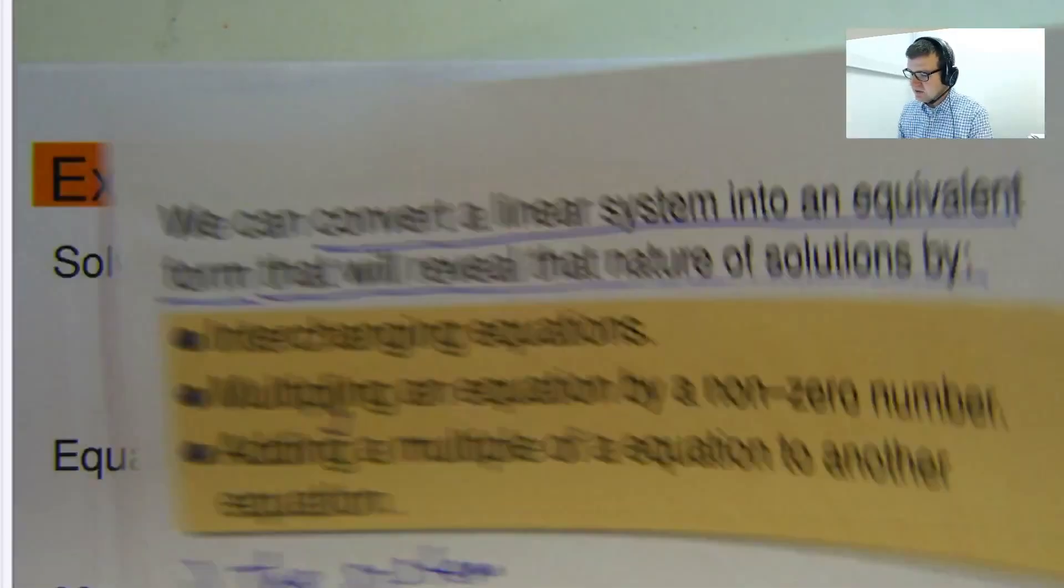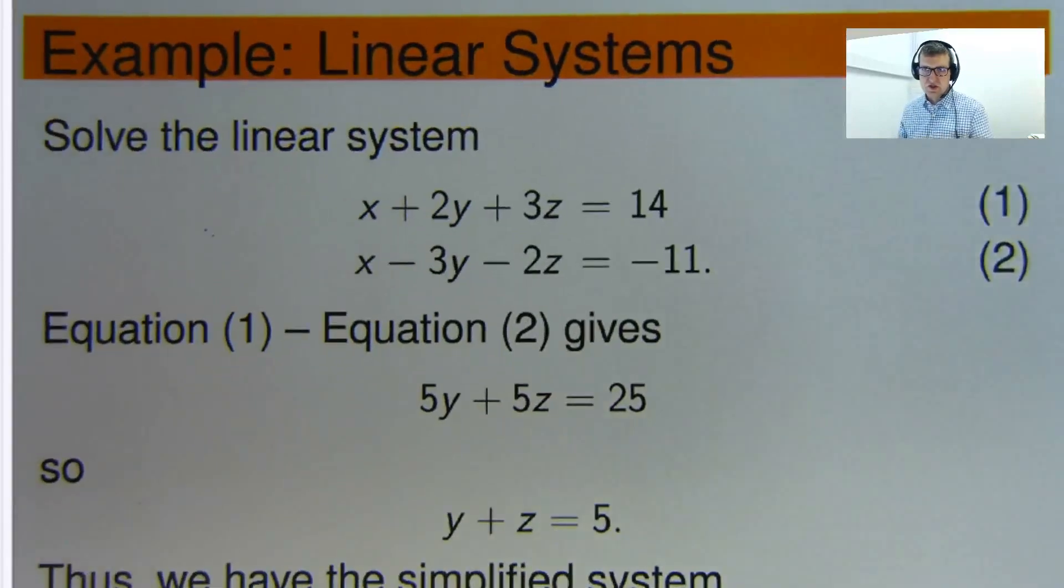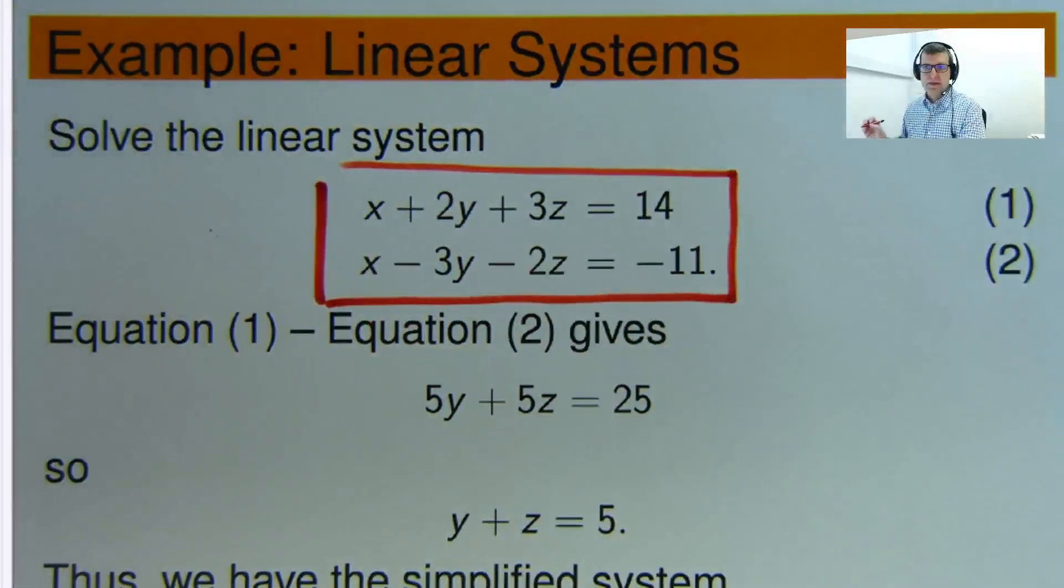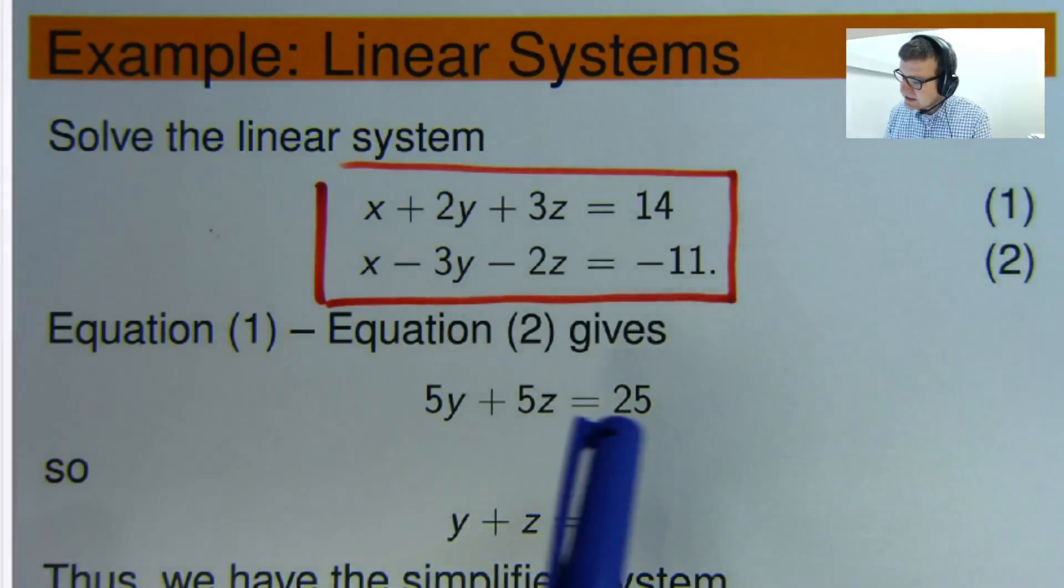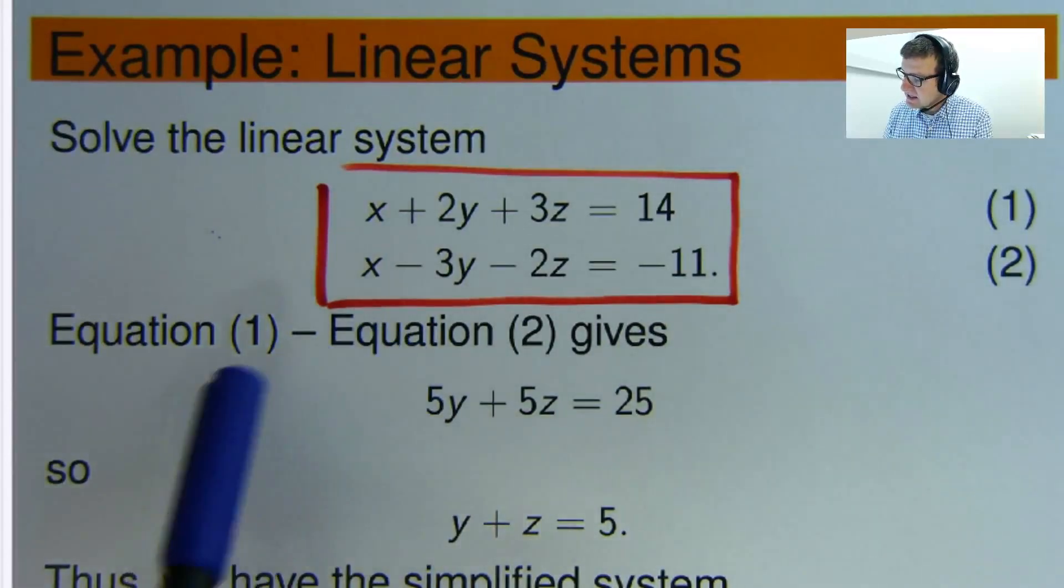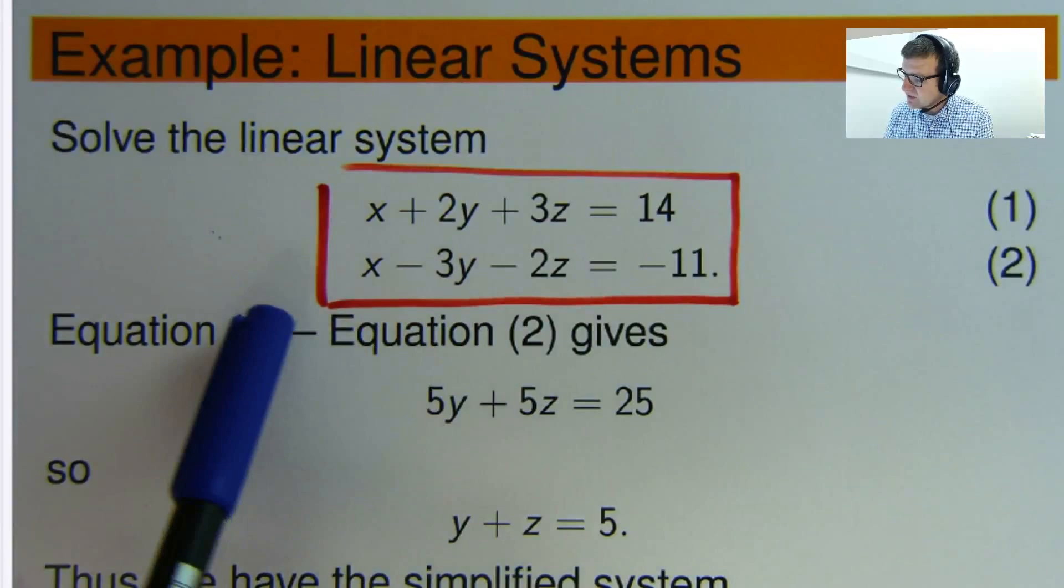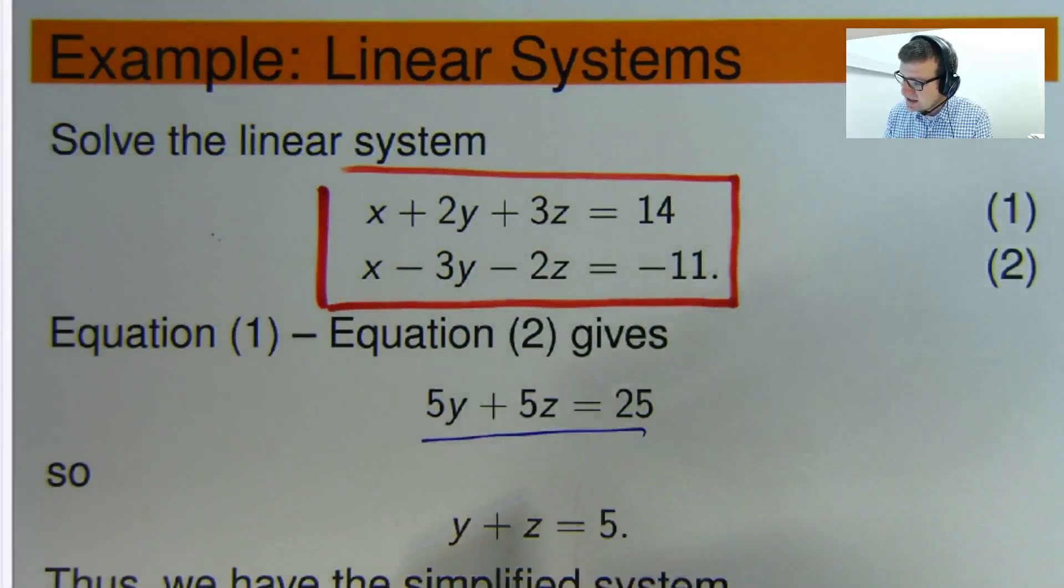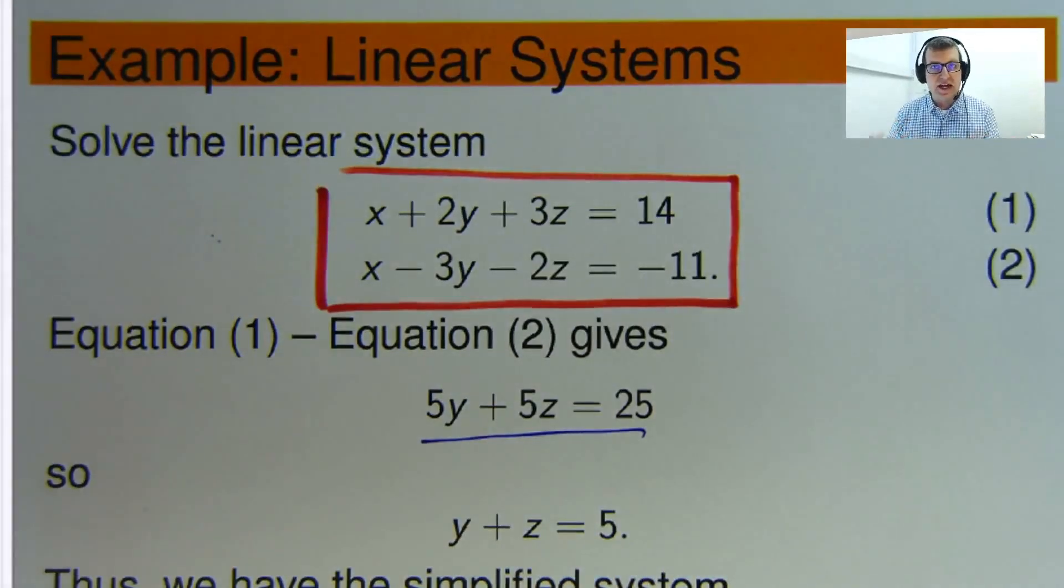So let me give you an example using the two equations, three unknowns type problem. So here's our linear system. The unknowns are x, y, and z. So you can see what I've done here, and this is one I've created earlier. I've taken equation two away from equation one, and that's eliminated the x's. So I get this kind of equation now. Now I haven't changed the nature of the solutions there.